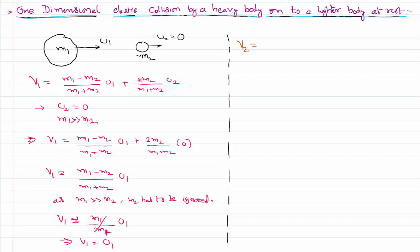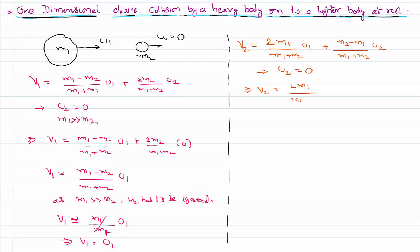The velocity of the second body after one-dimensional elastic collision is: v2 = 2m1/(m1 + m2) × u1 + (m2 − m1)/(m1 + m2) × u2. Putting the condition that the second body is in the state of rest (u2 = 0), v2 is approximately 2m1/(m1 + m2) × u1, and the second term becomes 0.